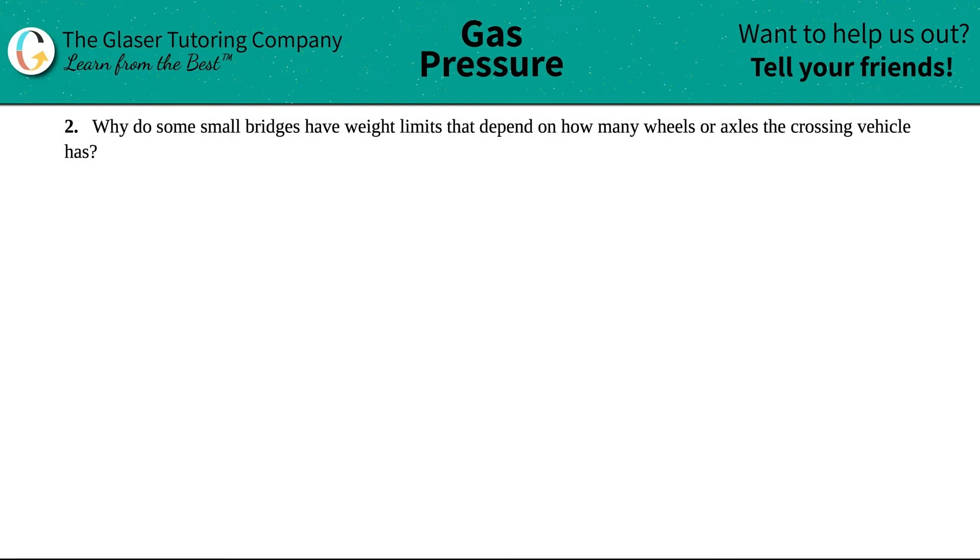Number two: Why do some small bridges have weight limits that depend on how many wheels or axles the crossing vehicle has? Okay, so in this case we're going to be talking a little bit about physics, but tying it into chemistry and pressure.